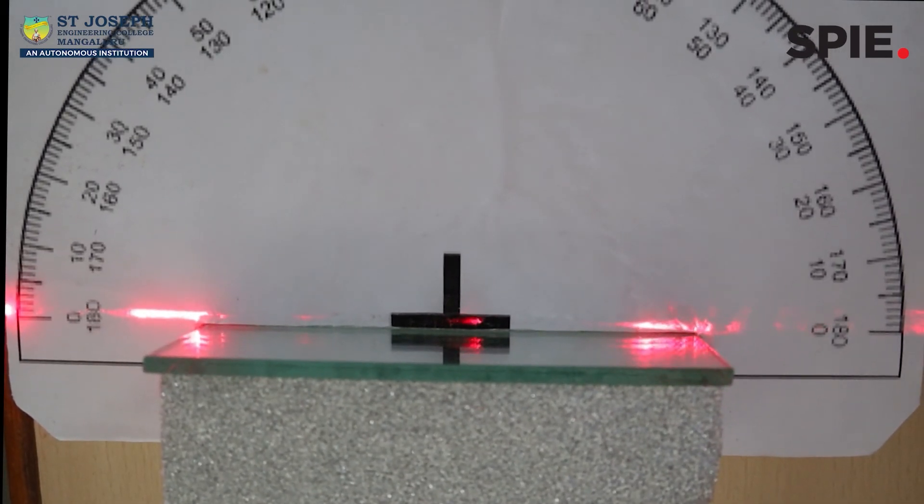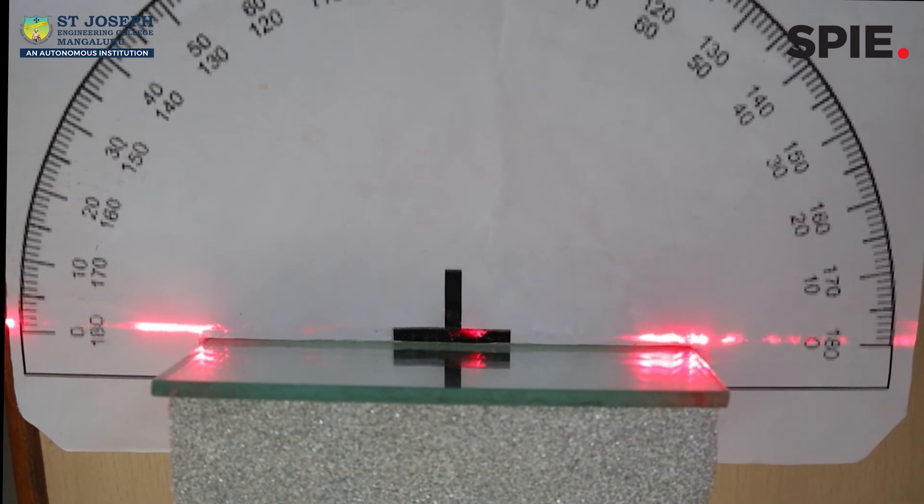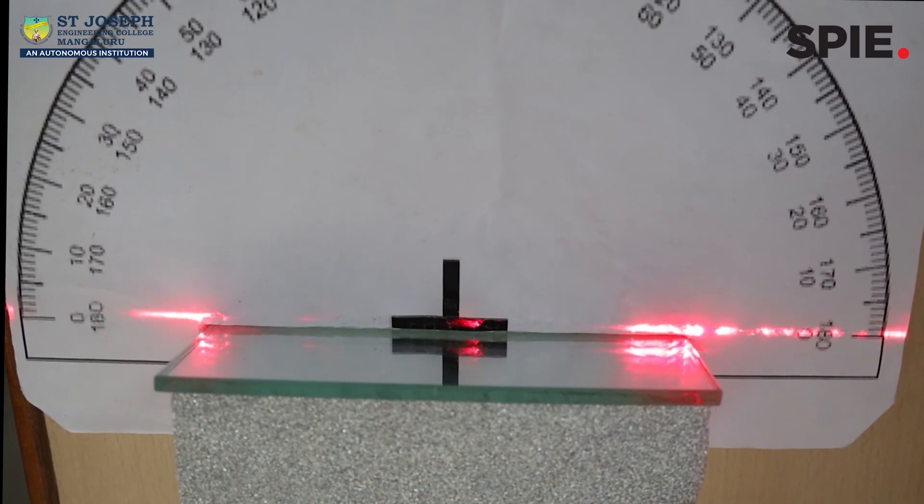When the light is projected on the baseline of the protractor, that is, at 180 degrees or 0 degrees, the light rays pass through the baseline without hitting the mirror surface.